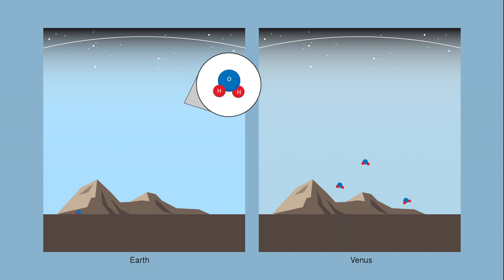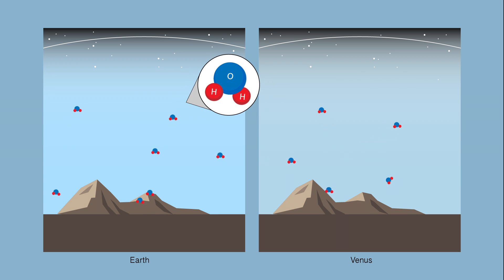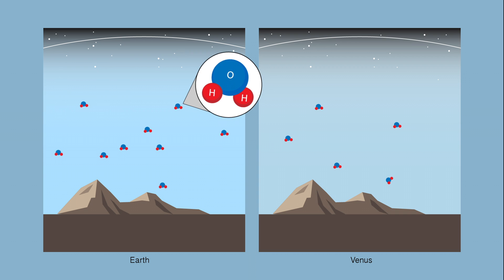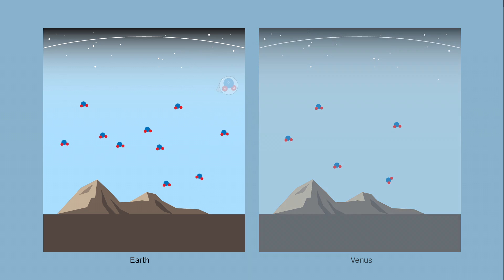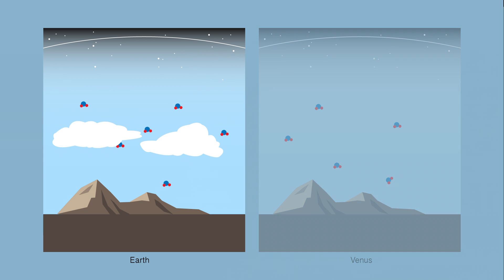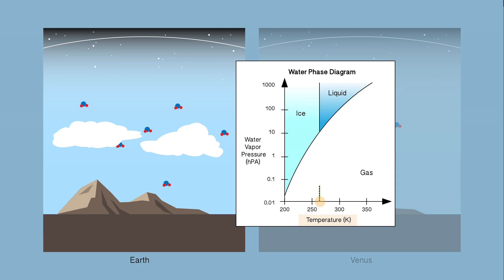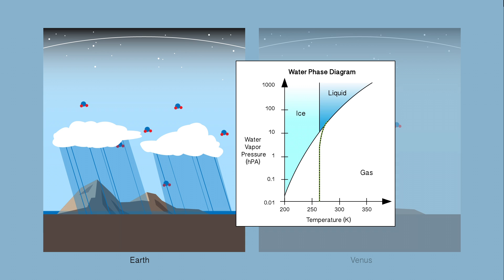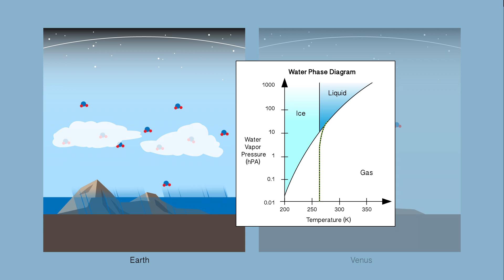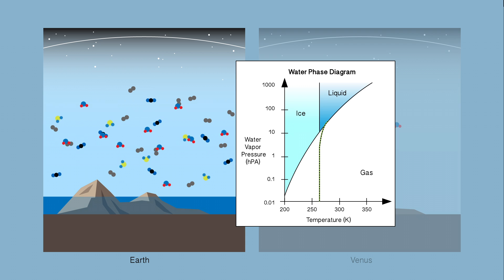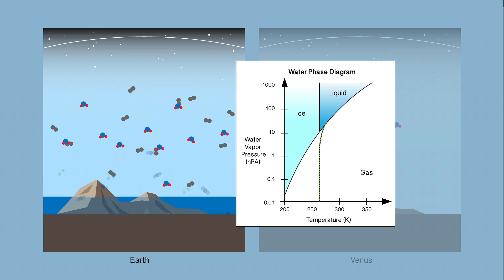After the formation of Venus and Earth, water vapor outgassed from both planets' surfaces into the atmosphere. On Earth, the water vapor condensed because the temperature was cool enough for water vapor to reach saturation vapor pressure. The water precipitated to form the early oceans. Molecules of carbon dioxide and sulfur gases dissolved in the ocean, leaving nitrogen behind as the dominant gas in our atmosphere.